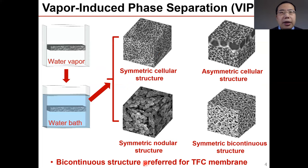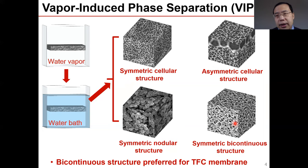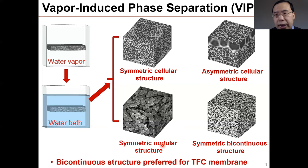VIPS typically uses water vapor to bring the homogeneous casting solution to phase separation. Typically, four morphologies can be obtained by VIPS: symmetric cellular structure, asymmetric cellular structure, symmetric nodular structure, and symmetric bicontinuous structure. When applied as a substrate for TFC membranes, bicontinuous structure is preferred due to its well-interconnected pores, which offer little transport resistance. However, compared with the common cellular and nodular structures, the bicontinuous structure is more difficult to obtain.